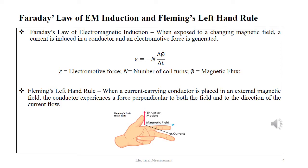Faraday's law of electromagnetic induction states that when exposed to a changing magnetic field, a current is induced in a conductor and an electromagnetic force is generated given by the equation Epsilon equals minus N dφ/dt, where Epsilon is the electromagnetic force, N is the number of coils and φ is the magnetic flux. Fleming's left-hand rule states that when a current conductor is placed in an external magnetic field, the conductor experiences a force perpendicular to both the field and to the direction of the current flow.